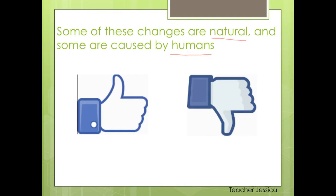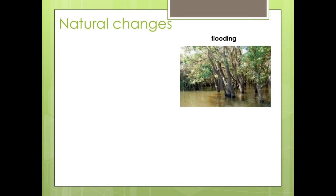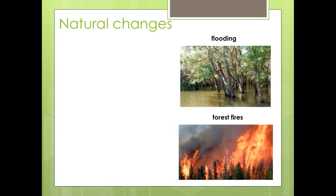Let's talk about natural changes. Let's see some examples. Flooding — sometimes it happens when it's raining a lot. And what else? Forest fires — yes, sometimes the weather is too dry and too hot. These are all natural changes.